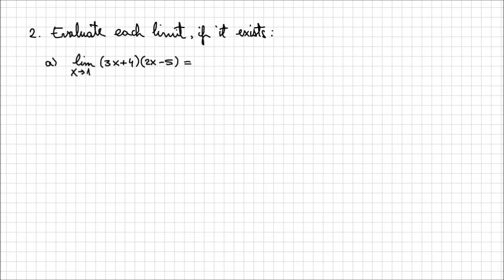So in this example I end up with 3 times 1 plus 4, times 2 times 1 minus 5. Evaluating this expression I end up with minus 21. You can see I can find the limit much faster this way.